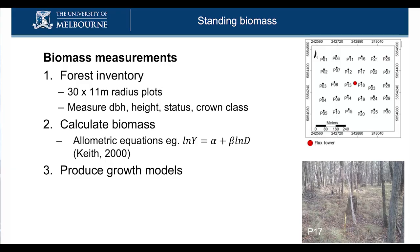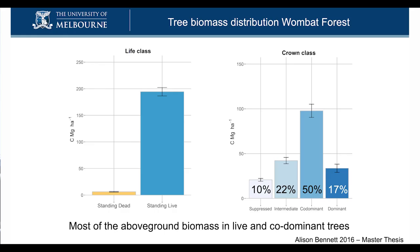We were interested in the biomass — what it's like and where it sits. We went out and did forest inventories around the flux tower: 30 plots with an 11-meter radius, measuring all trees within each circle. From this, using allometric equations, we can work out how much carbon or biomass is in the forest. First, we looked at how many live trees versus dead trees we have. The bulk of the biomass is in the live trees, not the dead ones.